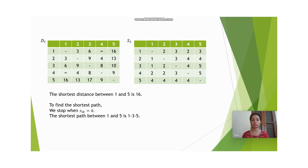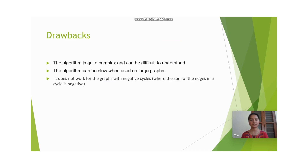This is how we find the shortest path and shortest distance between any pair of vertices. The major drawbacks of this algorithm are that it is quite complex and can be difficult to understand, it can be slow when used on large graphs, and it does not work for graphs with negative cycles — that is, where the sum of edges in a cycle is negative.